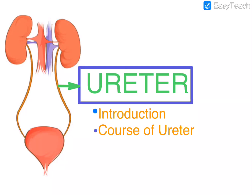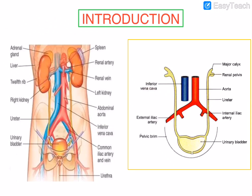Welcome back. In this session we are going to discuss the introduction and course of the ureter anatomy. A pair of ureters, right and left, which are 25 centimeters or 10 inches long, narrow, thick-walled muscular tubes, retroperitoneally located, connects the lower end of the renal pelvis with the urinary bladder.